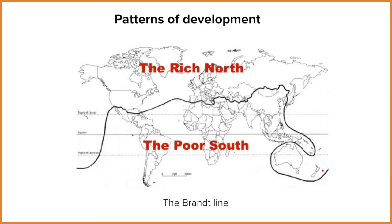However, what the Brandt Line is, is a depiction of development in 1980. Many countries have developed since then and this line hasn't been updated to accommodate that. For example, China is well on its way to becoming well past an LIC — it's currently an NIC and probably on the verge of being a richer country, a HIC. But this line hasn't been updated to represent that.